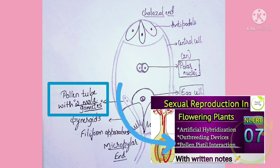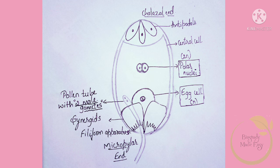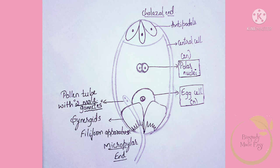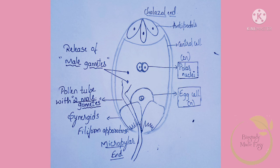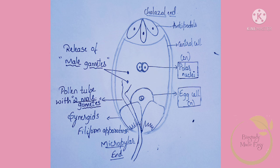The pollen tube enters through the micropylar end. Through one synergid, guided by the filiform apparatus, the pollen-pistil interaction proceeds. The pollen tube then releases the two male gametes into the embryo sac.